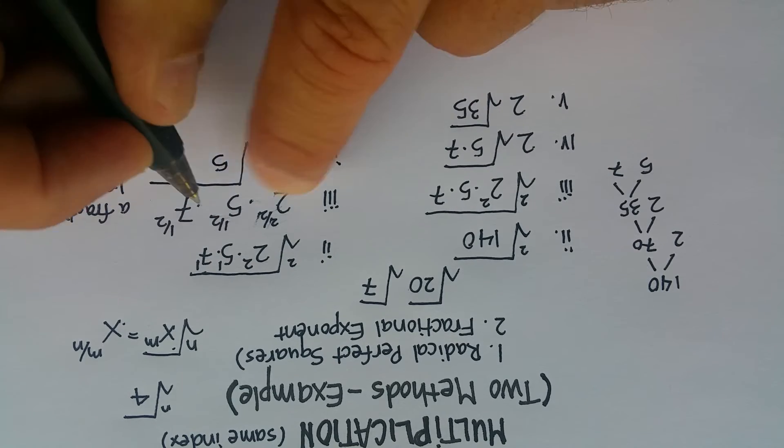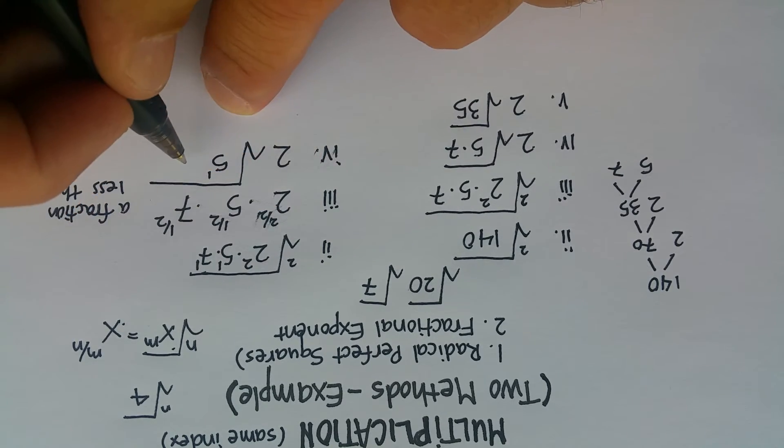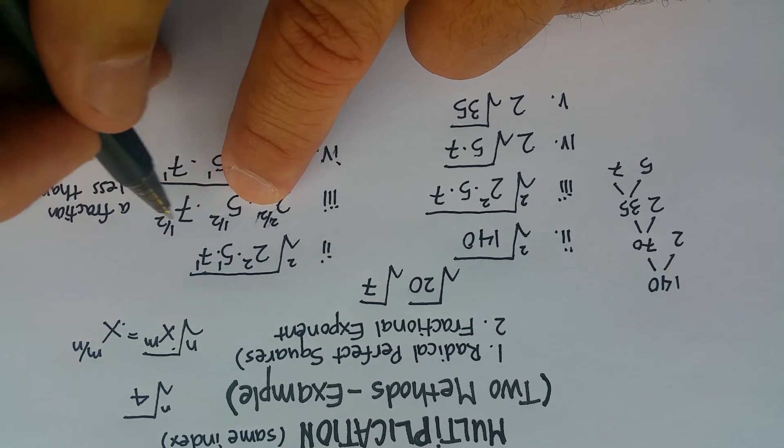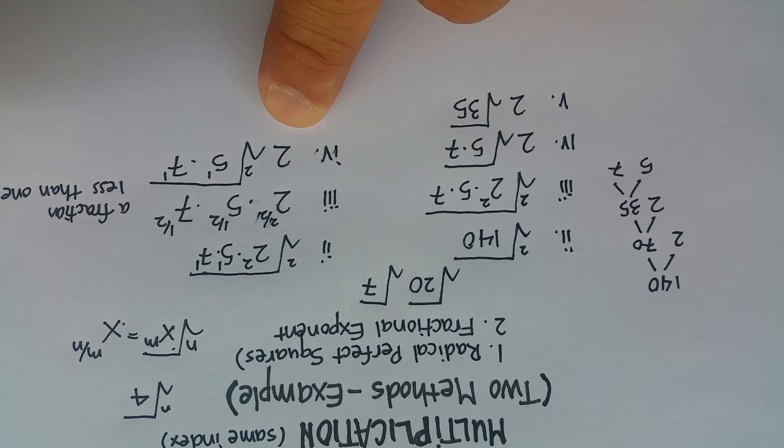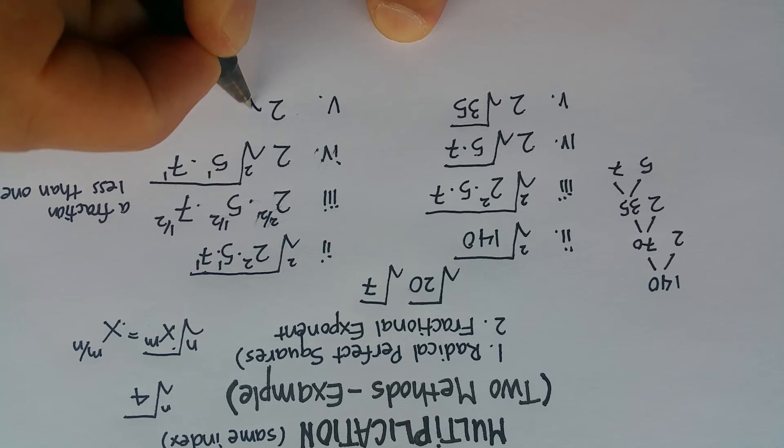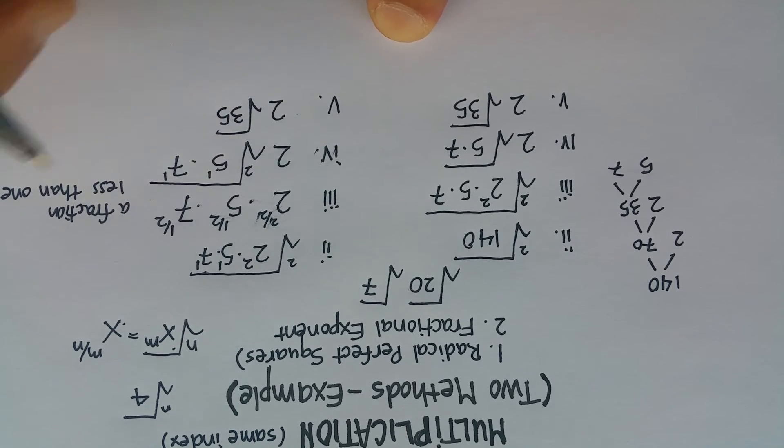So 5, remember the exponent is up there. 7, the exponent's on the top. And the index is the same here, so you just put a little 2 out there. And then you have the exact same thing you had over here, and it becomes 2 radical 35.